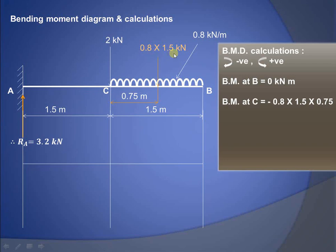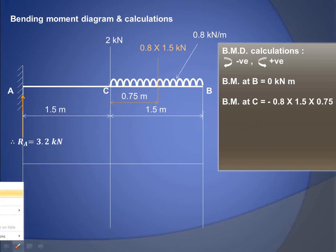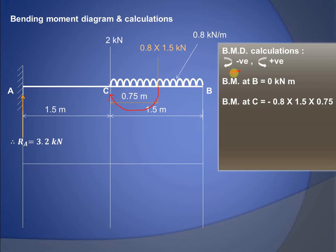The bending moment at C is due to the UDL converted to a point load: 0.8 × 1.5, with a perpendicular distance of 0.75 meters from its point of action to C. So bending moment at C = 0.8 × 1.5 × 0.75. This produces a clockwise moment, which is taken as negative by our convention, giving a bending moment at C of −0.9 kNm.